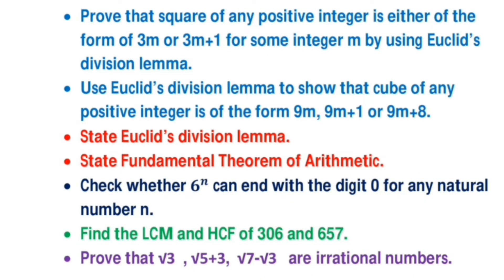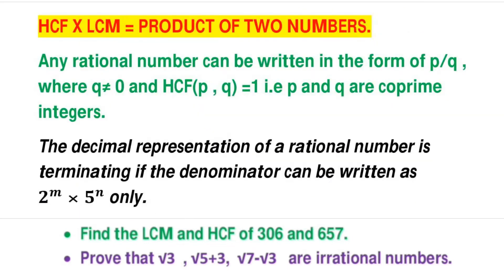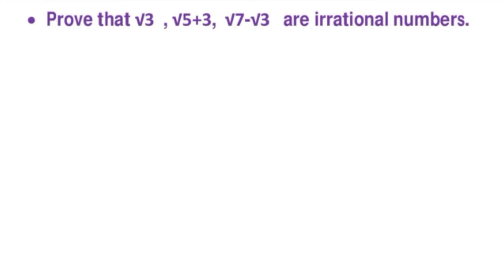Remember the statements of Euclid's division lemma as well as the Fundamental Theorem of Arithmetic. Next question: check whether 6 to the power n can end with digit 0 for any natural number n. You may also be asked to check whether 4 to the power n can end with 0. You may get questions to find the LCM and HCF of 306 and 657. Remember: LCM × HCF equals the product of two numbers — this relation is valid for only two numbers.